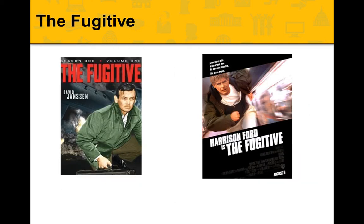We know this as the Fugitive case. There was a TV show back in the 60s and 70s, originally in black and white, starring David Janssen. Mr. Shepard was always in search of the one-armed man who he claimed killed his wife. They made that into a movie called The Fugitive with Harrison Ford, which you can find on TV or stream on Netflix. That is the basis of the court case of Shepard v. Maxwell.